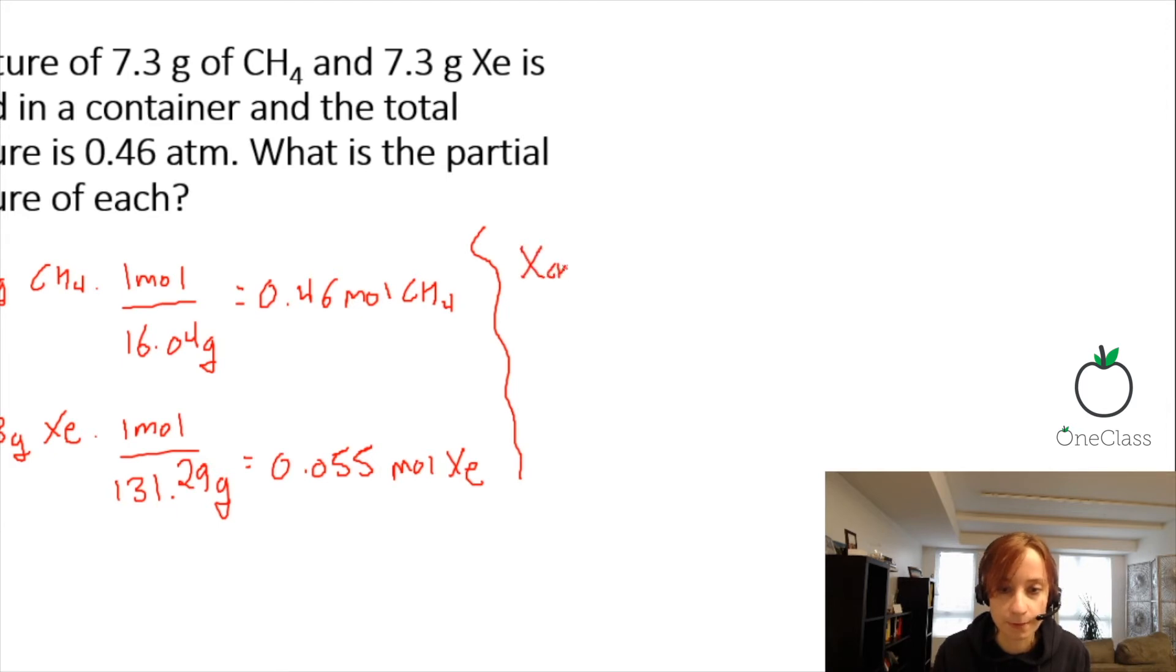If we want to find the mole fraction of methane, we need the moles of methane over the moles of methane and the moles of xenon. So to do this, it would be 0.46—because we already calculated the moles—over 0.46 plus 0.055, which gives us 0.89.